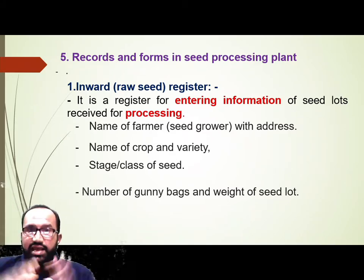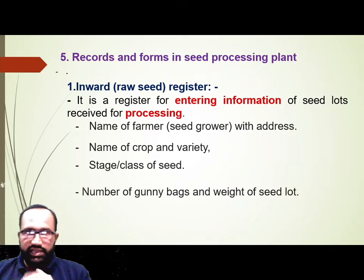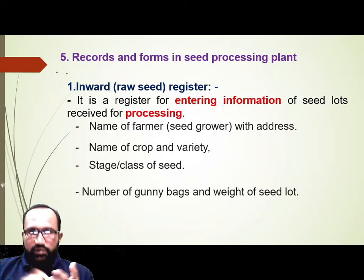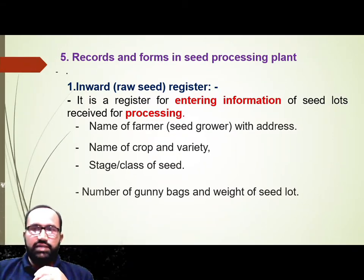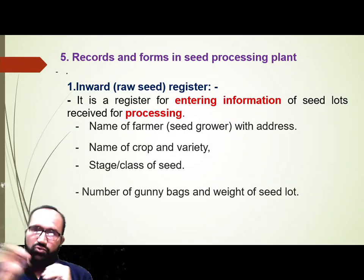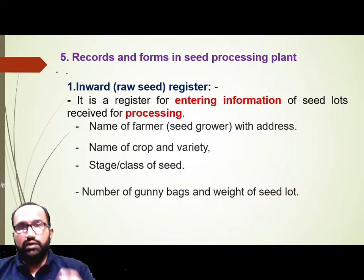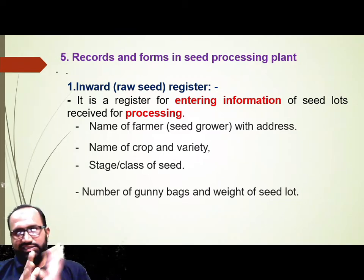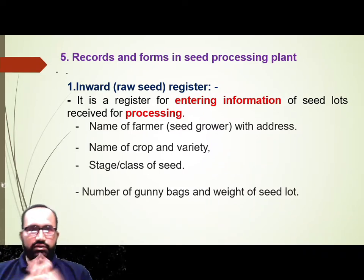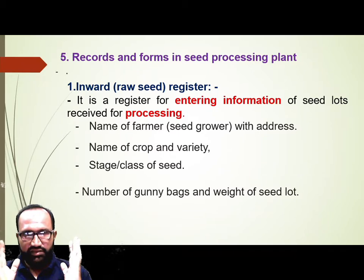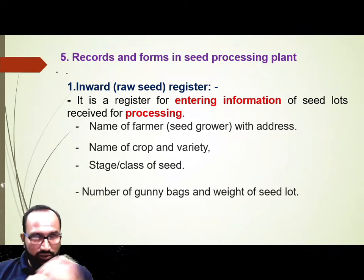Records and forms — form does not mean a field form, but paper records. Records and Forms in Seed Processing Plant: we will see what records are needed. The first register is the Inward Register or Raw Seed Register. It is a register for entering information of seed lots received for processing.